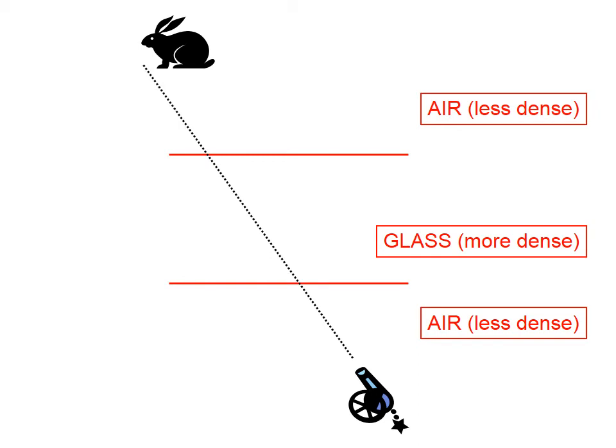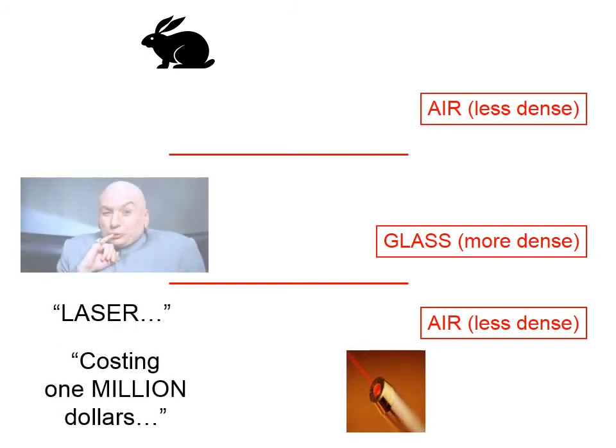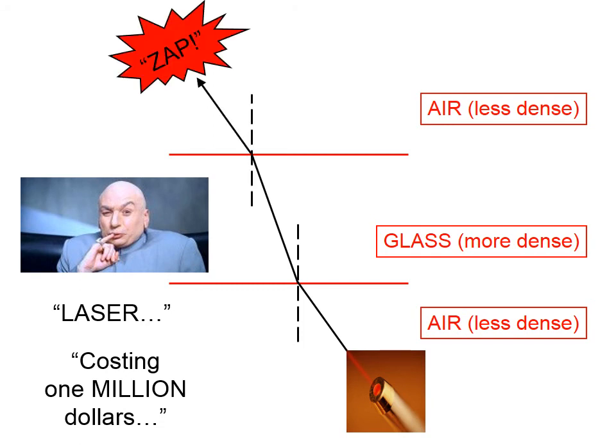If you were to want to shoot this rabbit with this object, assuming that there would be no deviation, a bullet, for example, would miss the rabbit. However, if you used a laser costing one million dollars, the laser light would bend toward the normal, then away from the normal and zap the rabbit.